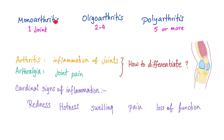Monoarthritis is inflammation of one joint. Oligoarthritis involves two to four joints, because oligo means few. Polyarthritis involves five or more joints, because poly means many. Arthritis means inflammation of joints, but arthralgia is just joint pain — algia means pain.